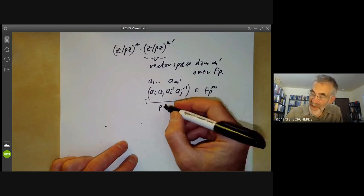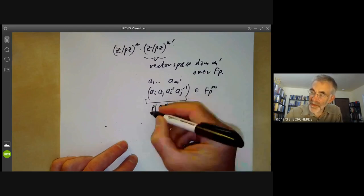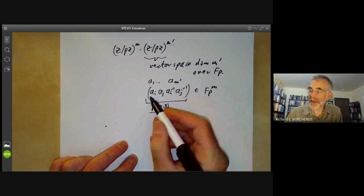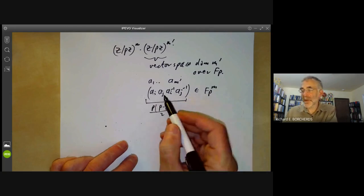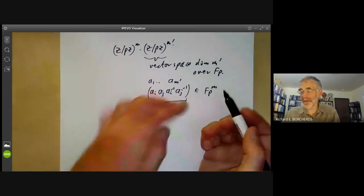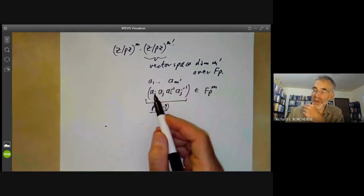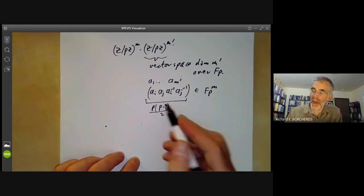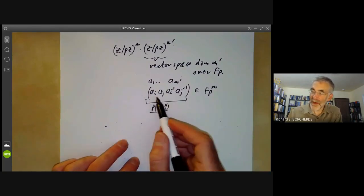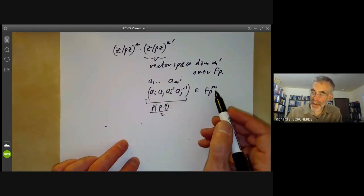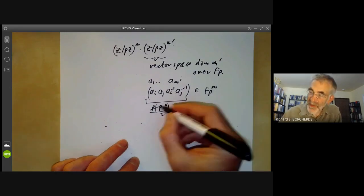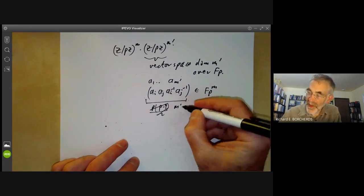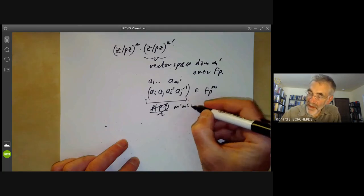Because if we swap i and j we're only going to take the inverse of this. So we can really only choose this for i not equal to j. For each of these, sorry, that's not p times p minus one over two, it's m prime by m prime minus one over two.